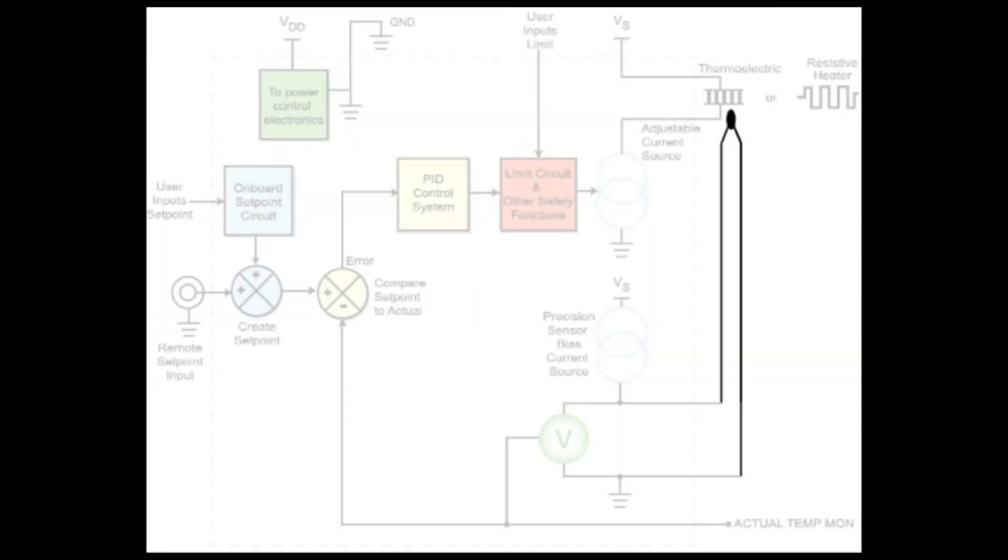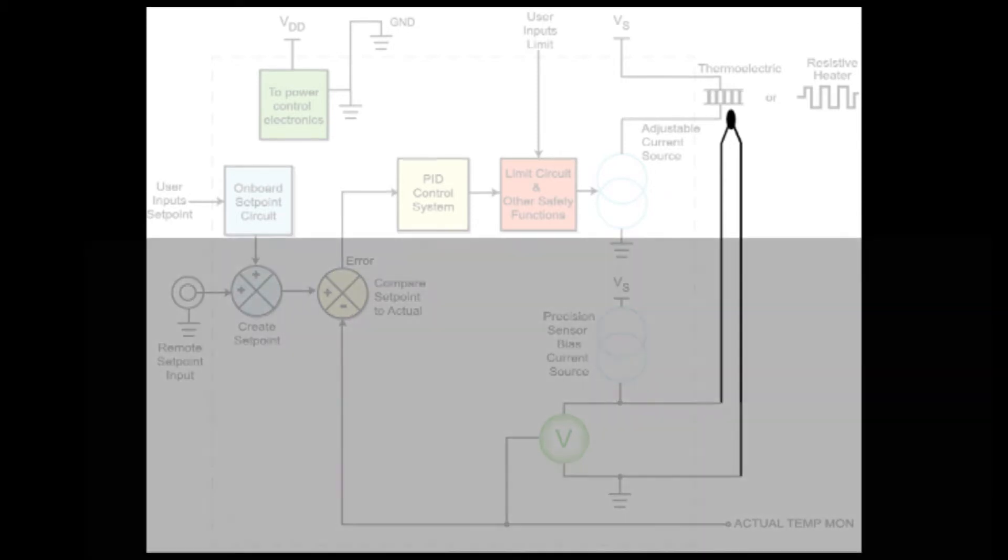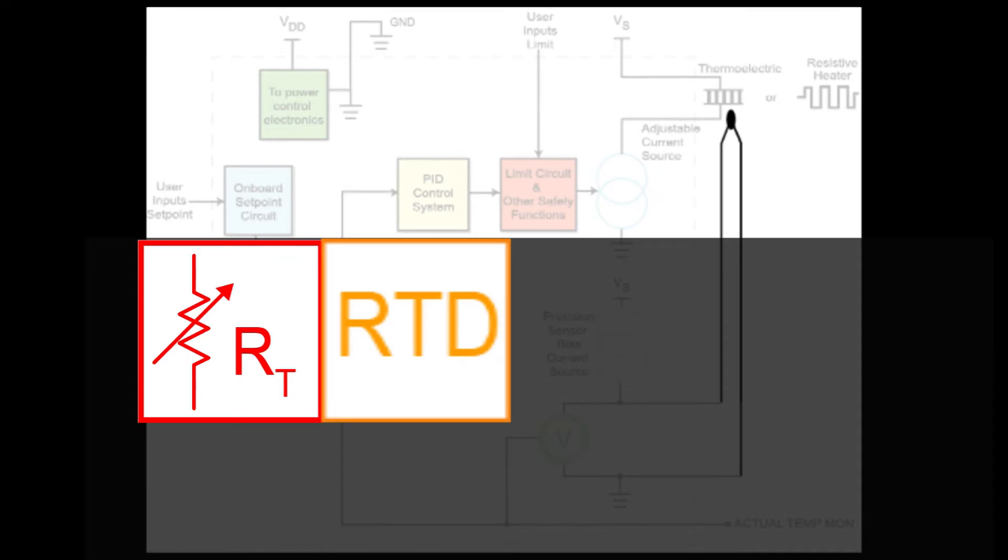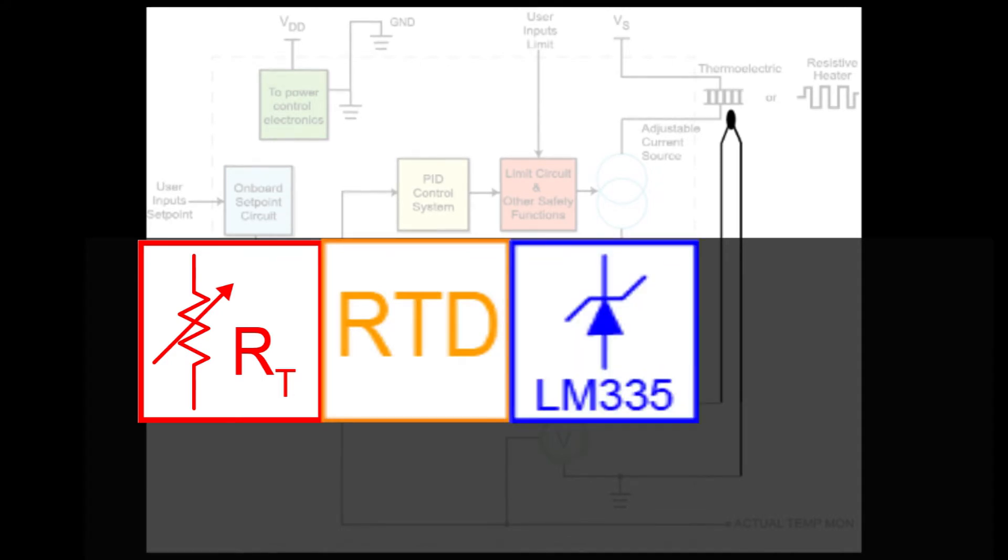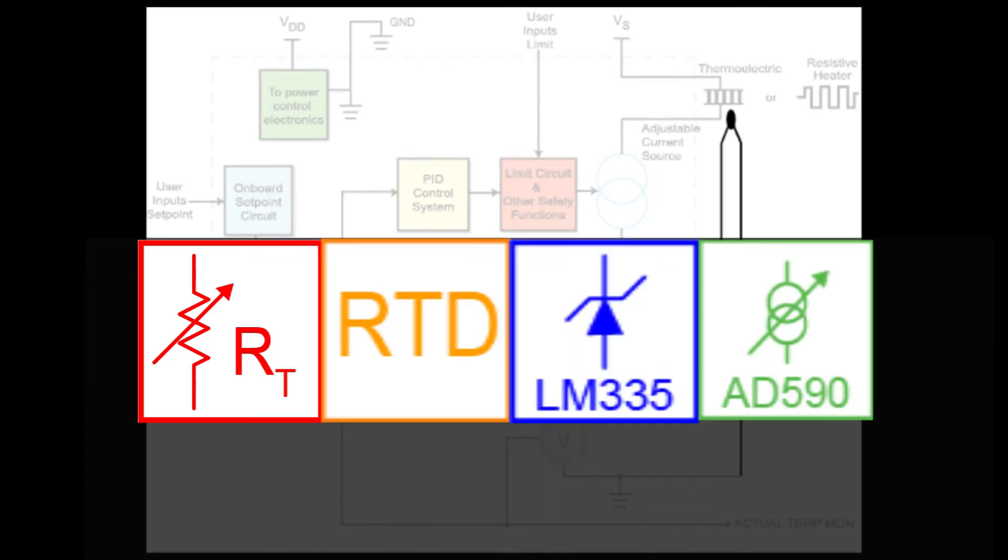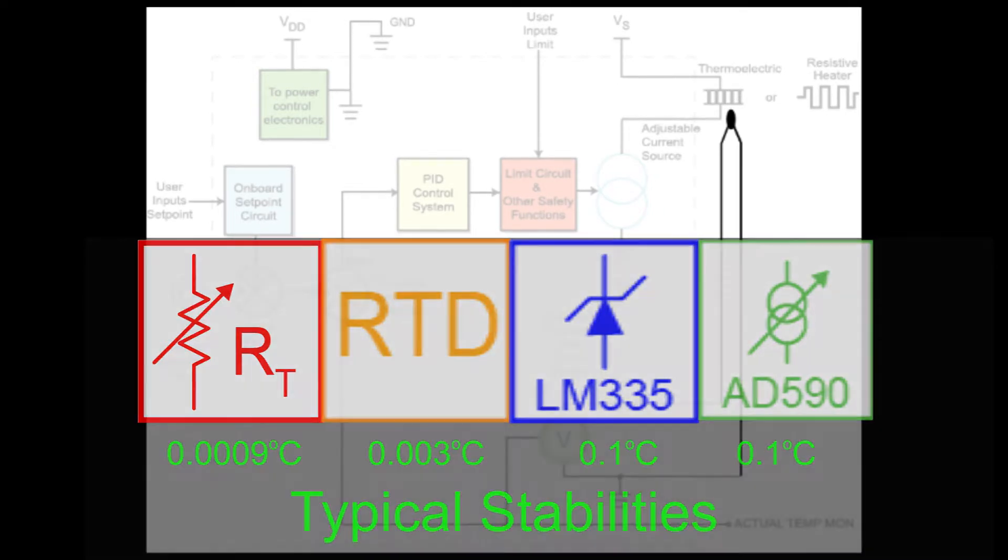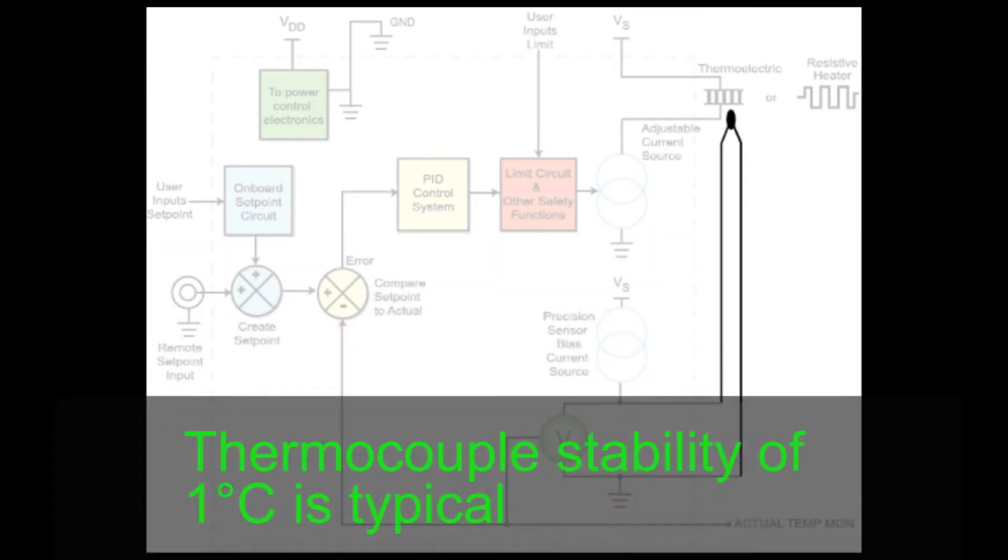A precision temperature controller uses feedback from a temperature sensor, typically thermistors, RTDs, or linear devices such as the LM335 or AD590. With these sensors, stabilities of 10 mK to 1 mK are commonly achievable. Less precise sensors, thermocouples, can also be used for stabilities of about 1 Kelvin.